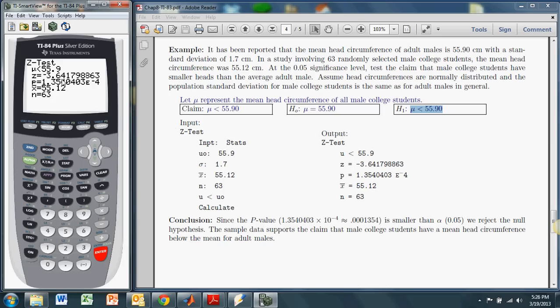Then it gives us the test statistic, negative 3.61417. So that's a, as far as z-score goes, that's pretty big. I mean, it's negative, but it's a big negative.